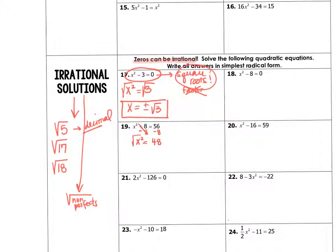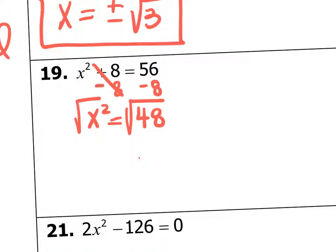I will take the square root on both sides. So I'm going to take the square root on both sides, and I got x² equals 48, or x equals plus or minus the square root of 48.